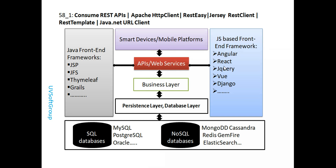You can see in the diagram the red block representing REST APIs and microservices. Once you have your microservices published, you can consume them from any front-end technology — Java front-end technologies like template engines, or the most popular nowadays: JavaScript-based frameworks like Angular, React, jQuery, Vue, and Ember. Depending on which front-end technology you use, you can build any sort of web application — JavaScript-based, Java-based, or mobile-based.